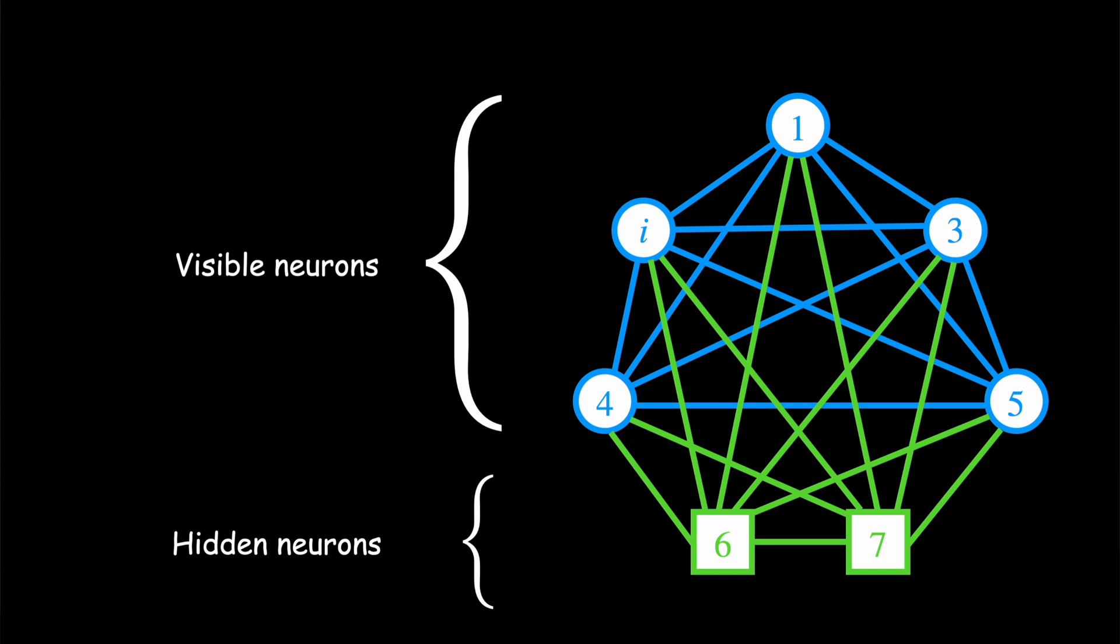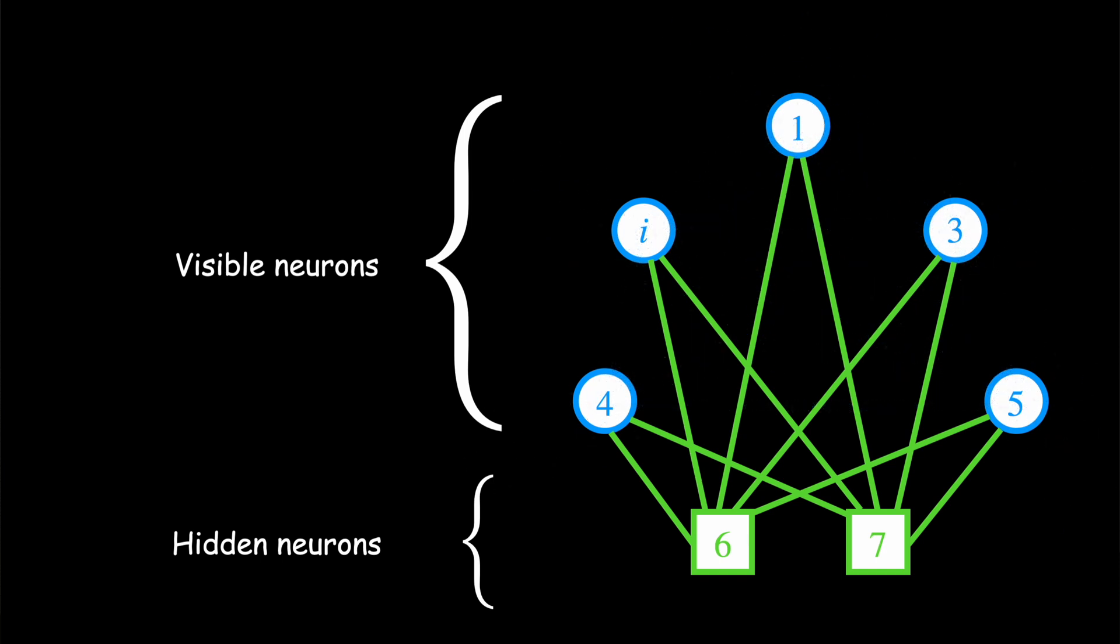To tackle that issue, Hinton introduced the restricted Boltzmann machine. Hinton just took a Boltzmann machine from which he removed all the links between two hidden neurons or between two visible neurons and only left all the links connected a visible neuron to a hidden one. For the graph theory enthusiasts out there, this network is called a complete bipartite graph.